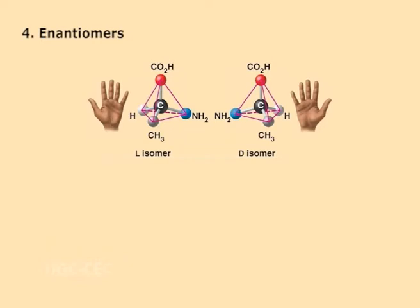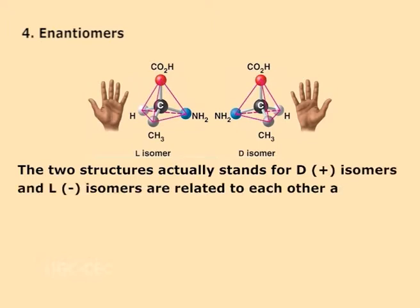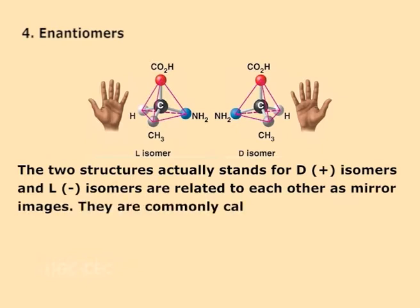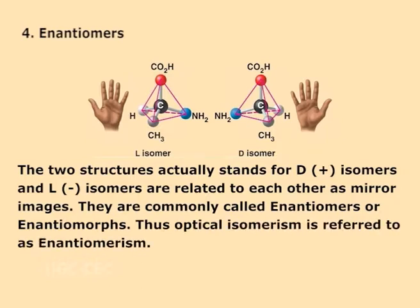Number 4: Enantiomers. The two structures representing positive and negative optical isomers are related to each other as mirror images. They are commonly called enantiomers or enantiomorphs. Thus, optical isomerism is referred to as enantiomerism.